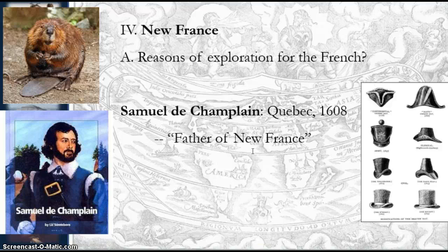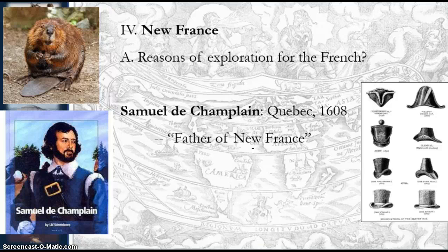Giovanni di Verrazzano started this whole process. In 1524, he sailed the American coast from Carolina to Maine. He was probably the first European to see New York Harbor and the first to establish French claims to the eastern United States. Also, Jacques Cartier explored up the St. Lawrence River in the 1530s. In response, Spain erected Fort St. Augustine in Florida in 1565 to keep the French out of North American interior and the Caribbean.